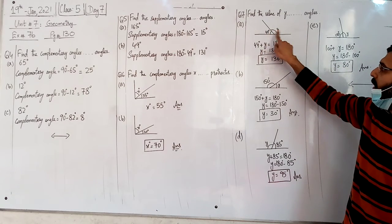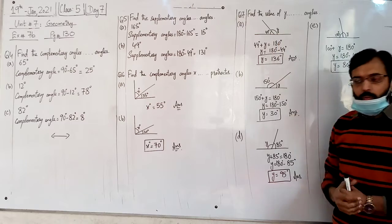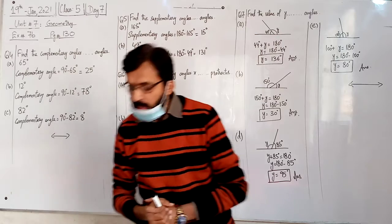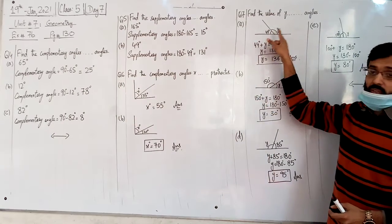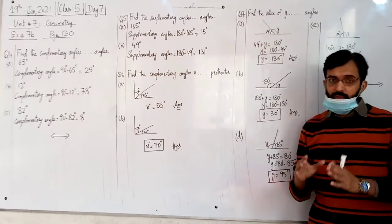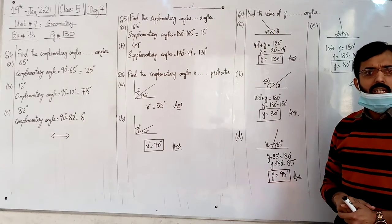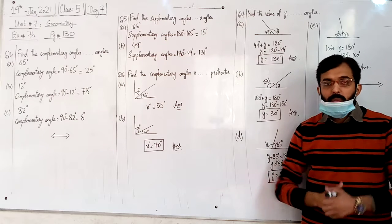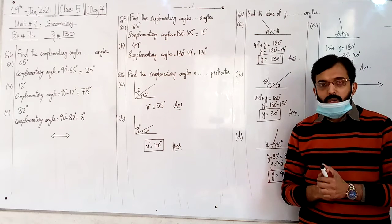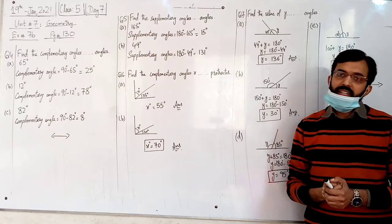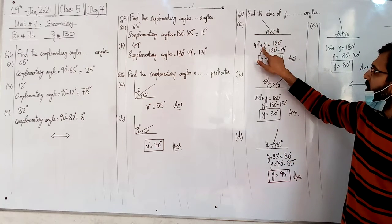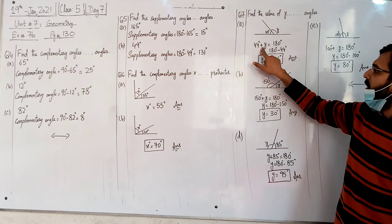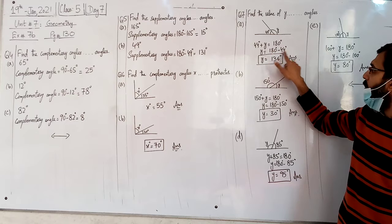Question number 7: find the value of y in the given set of supplementary angles. This set of supplementary angles, you calculate the y value. If you know supplementary angles, two angles are supplementary if their sum is 180.